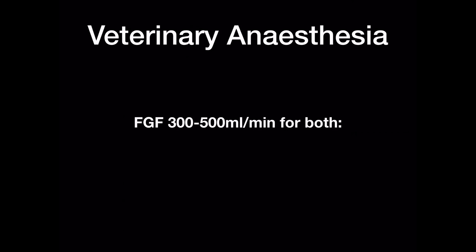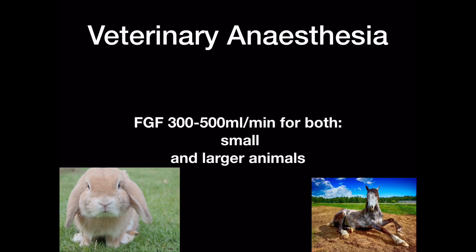Whilst veterinary anaesthesia is sadly beyond my expertise as a human anaesthetic doctor, I am reliably informed that it is possible to use a modified Humphrey ADE system that will allow the veterinary anaesthetist to use a fresh gas flow of 300 to 500 mL per minute for both small and large animals. If you are a vet and disagree with this, please do let me know, as it will be really interesting to get your perspective — the system appears to be mainly a historical one that is more popular in exams than in anaesthetic rooms in UK hospitals.